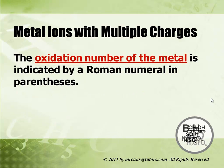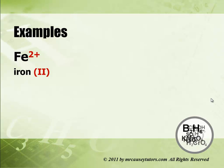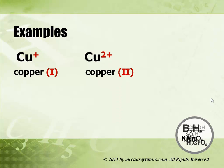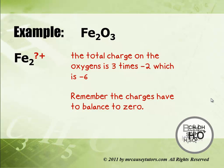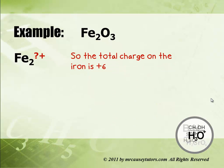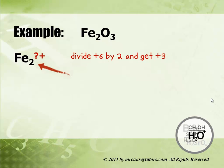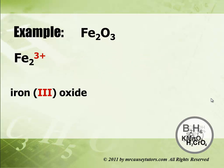Metal ions with multiple charges: the oxidation number of the metal is indicated by a Roman numeral in parentheses. For example, copper can be copper(I) or copper(II). We have iron(II) and iron(III) — it's really that simple. Take Fe2O3: the total charge on the oxygen is three times negative two, which is negative six. The charges must balance to zero, so the iron must total positive six. Divide plus six by two and we get plus three — so this is iron(III) oxide.